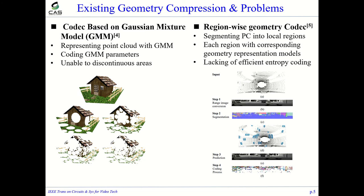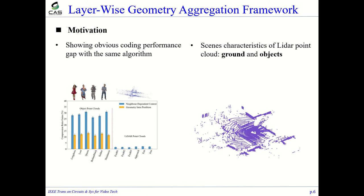Another novel geometry representation model is the Gaussian mixture model. The Gaussian mixture model compresses complex data using only a reduced distribution set, but this method cannot well deal with discontinued areas. The aforementioned geometry compression methods show much better compression performance for object point clouds than LiDAR point clouds. The main reason is that LiDAR point clouds are more sparse, and the relations between points are more difficult to utilize than in object point clouds.